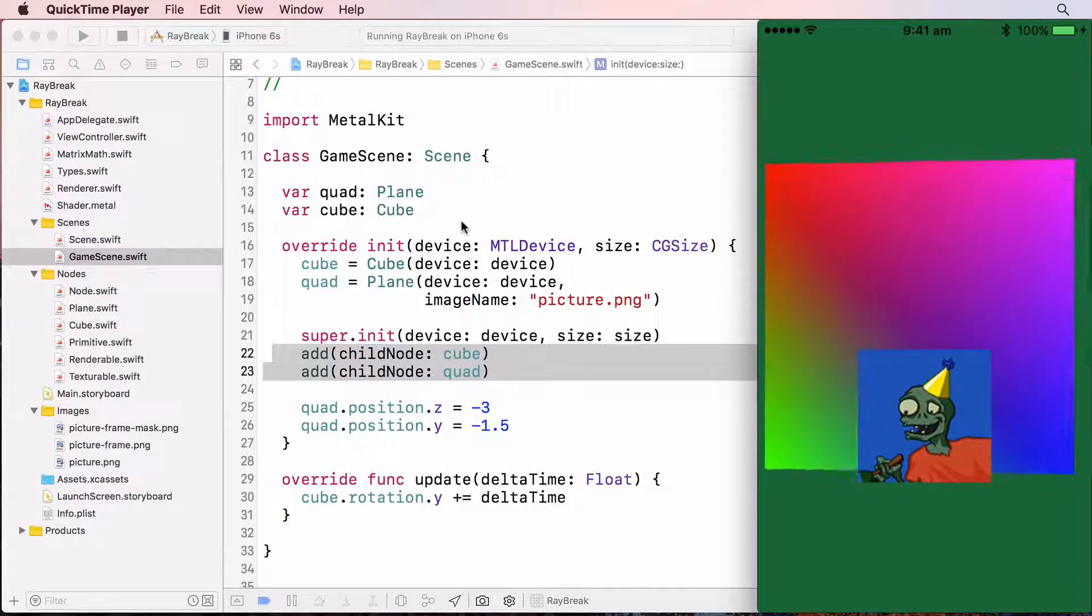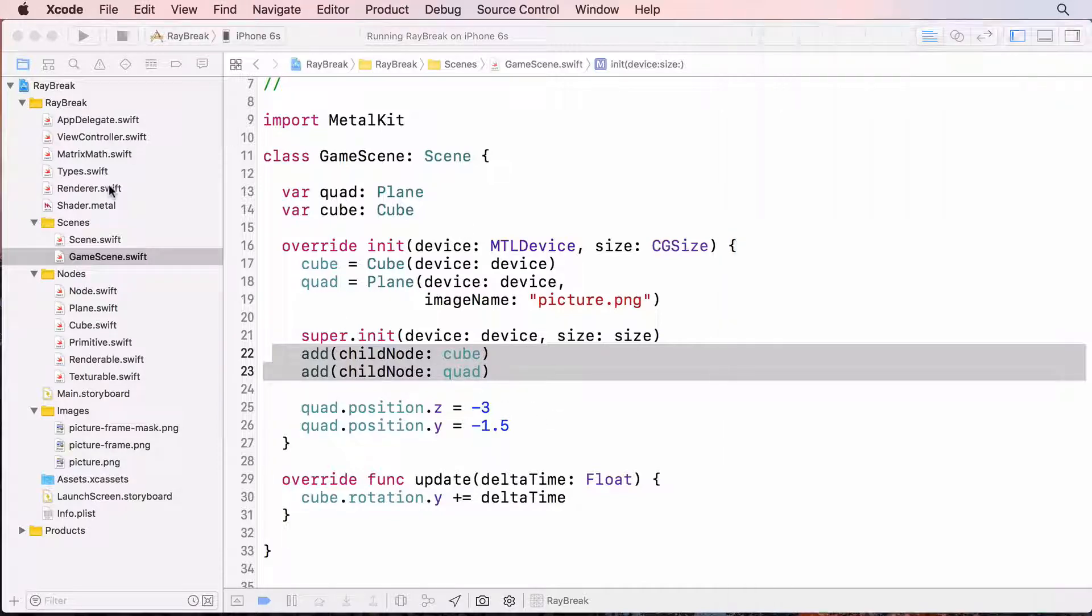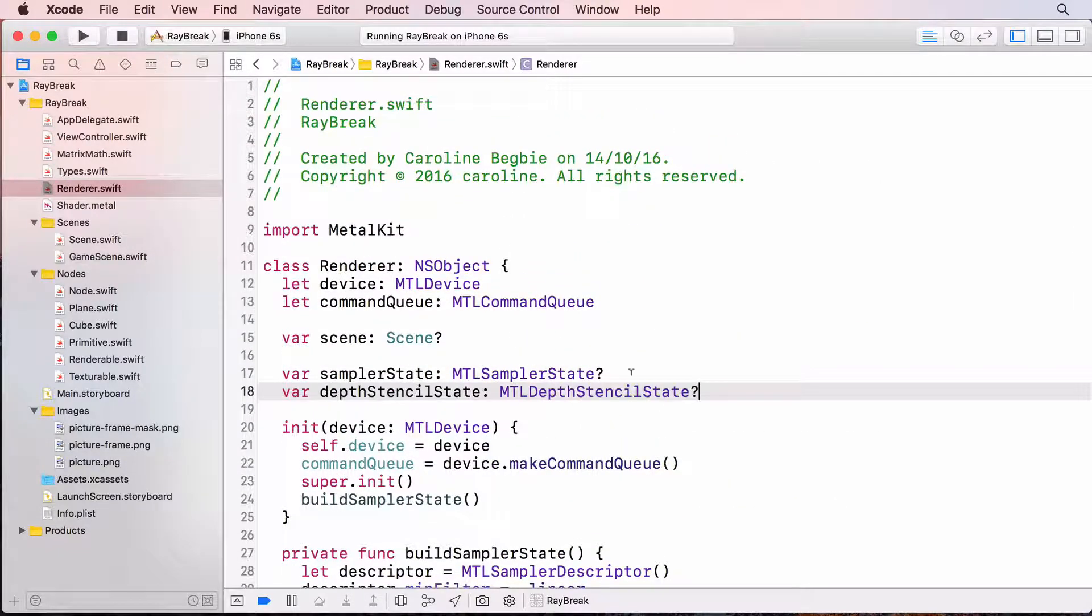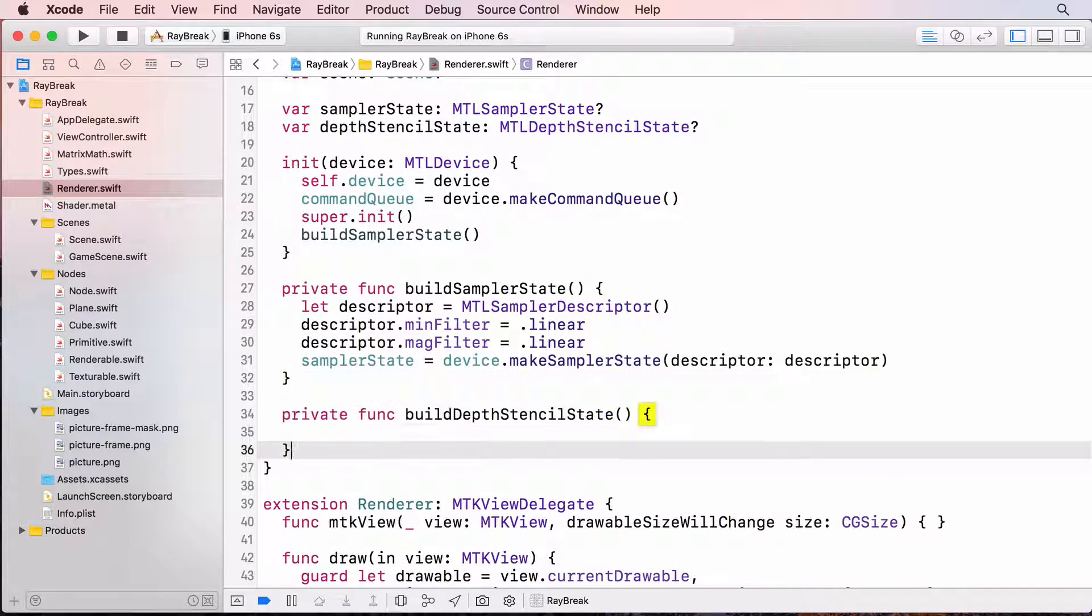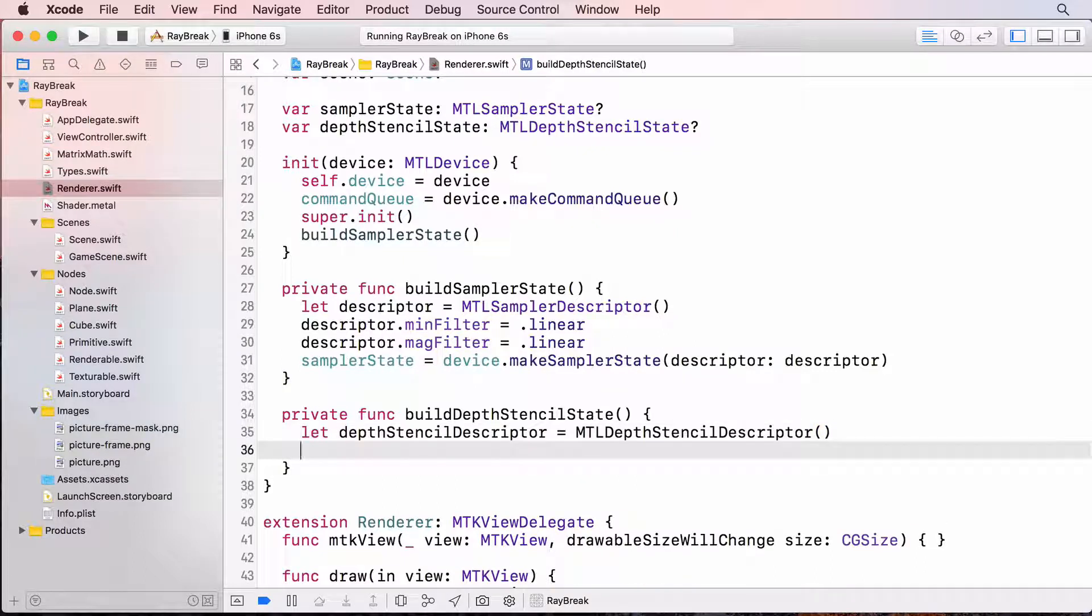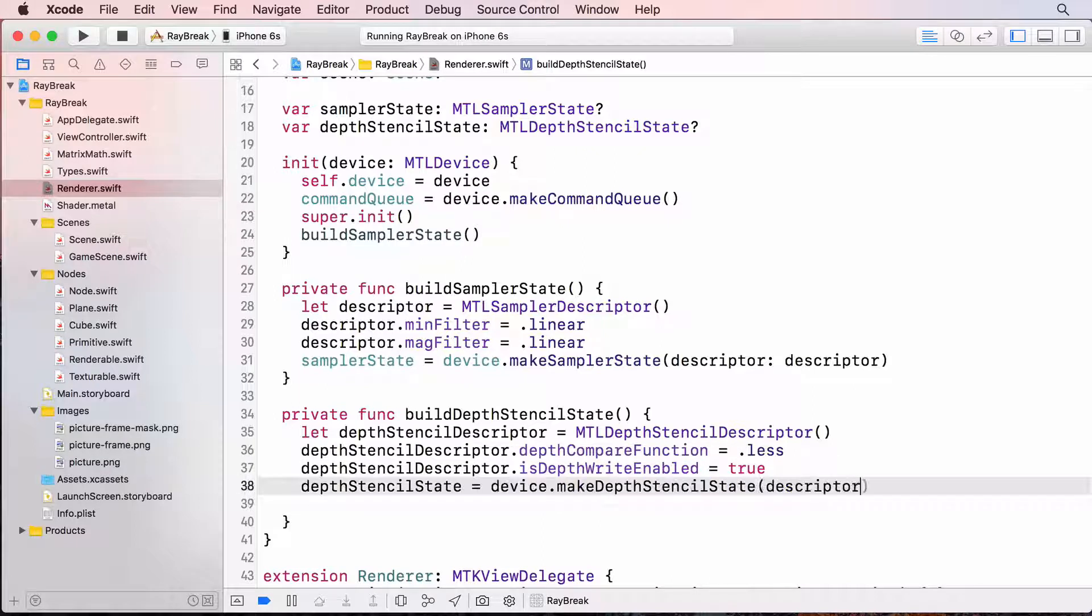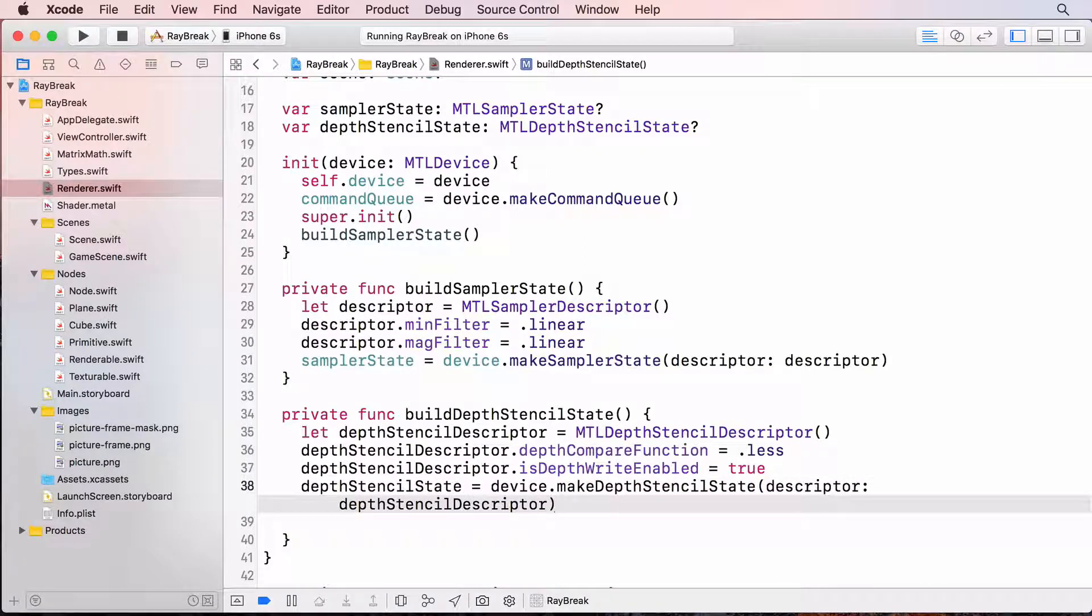We'll use the same depth testing method on all models, so we can do all this in Renderer. So in Renderer, I'll add a new property for the depth stencil state, and create a method to build this depth stencil state. As usual, we'll create the state using a descriptor. We need to set two properties on the descriptor. Depth compare function is the comparison method. Here we use less to check whether any fragment is closer. Any fragments that are further away are discarded. We also want to record the depth value so that we can compare against it later. So we set isDepthRightEnabled to true. And now we create the depth stencil state using the descriptor. And I'll call this method from init.